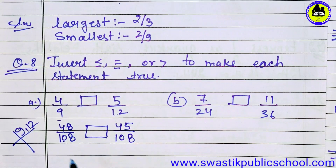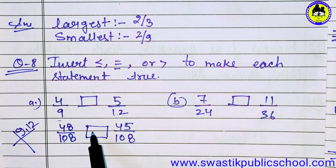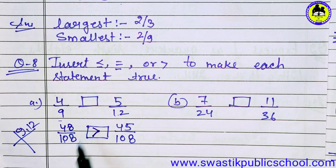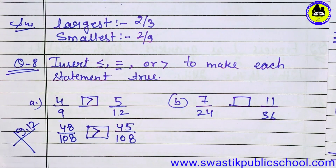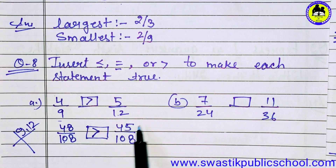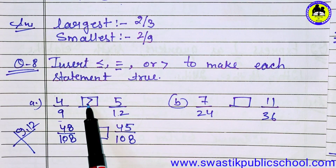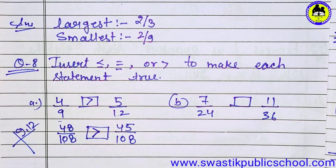Now the denominators are the same, so we can compare the numerators. Between 48 and 45, 48 is greater and 45 is smaller. So the symbol that will come here is greater than — meaning 4 upon 9 is greater than 5 upon 12. Similarly, you have to do all the remaining parts — part B, C, D — by finding the LCM, converting to like fractions, and inserting the correct symbol.